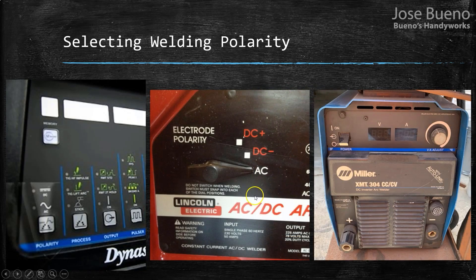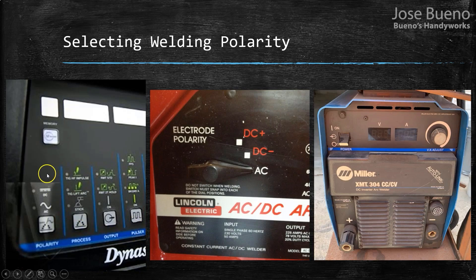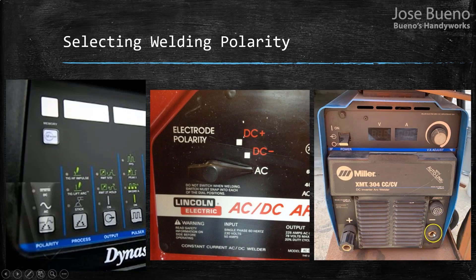When we select polarity in welding, we are essentially telling the machine what direction we want the current to travel. Sometimes we can achieve this with a push of a button, sometimes we have to rotate a switch, and sometimes we have to rearrange how our welding cables are attached to the machine. It all just depends on what kind of machine we're using to weld.